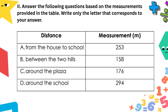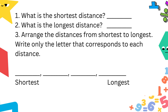For Part 2, answer the following questions based on the measurements provided in the table. Write only the letter that corresponds to your answer. The distances are: A — from the house to school, 253 meters; B — between the two hills, 158 meters; C — around the plaza, 176 meters; D — around the school, 294 meters. Number 1: what is the shortest distance? Number 2: what is the longest distance? Number 3: arrange the distances from shortest to longest, writing only the letter that corresponds to each distance.